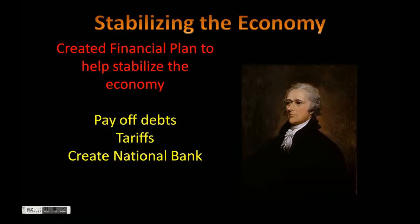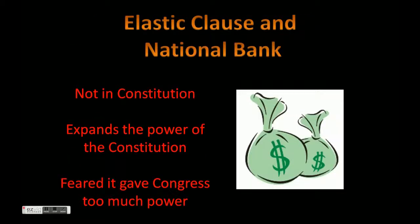Moving on, we're looking at stabilizing the economy. You have all this debt and everything. Hamilton was appointed as Secretary of Treasury and he came up with a plan for stabilizing the American economy. His plan had three parts: number one, pay off debts; number two, have countries importing goods into the United States pay a tariff; and number three, create the National Bank.